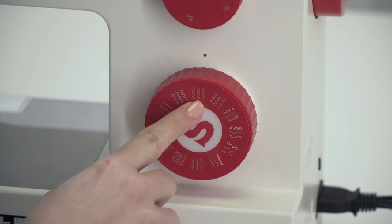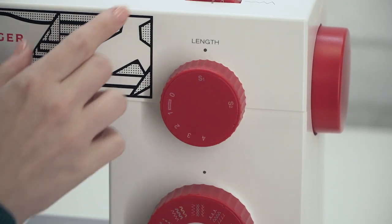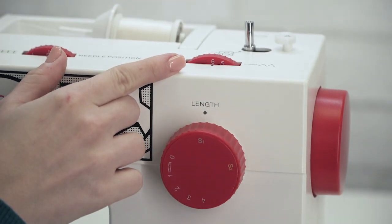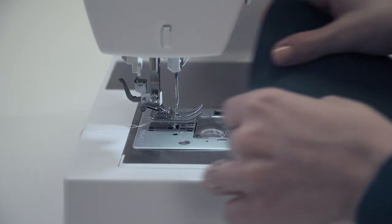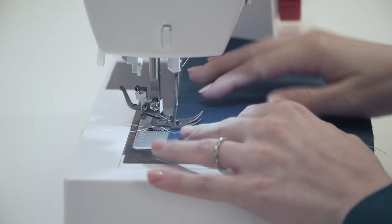Now let's try the honeycomb stitch. Turn the length dial to the blue number and we're going to leave our stitch width at 6. Place your fabric, bring down the presser foot, and begin sewing.